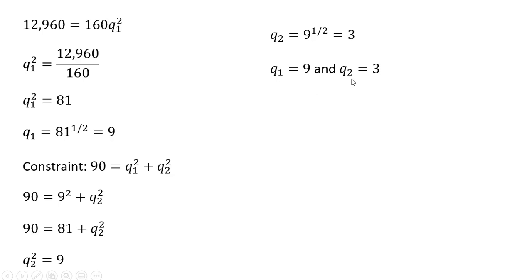So the revenue maximizing levels of output are as follows: 9 units of good 1 and 3 units of good 2. And the revenue at that level of output is $120.